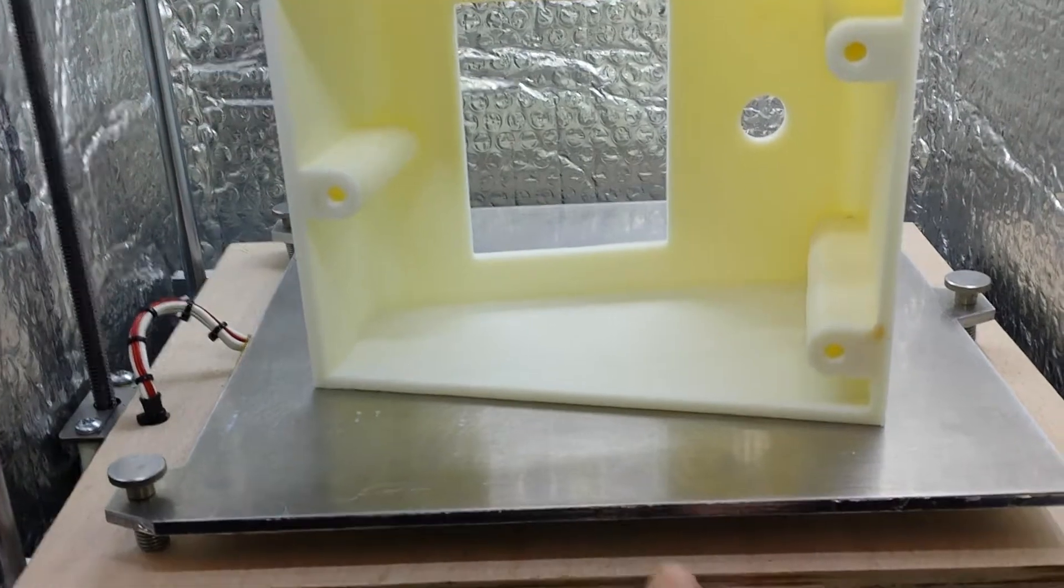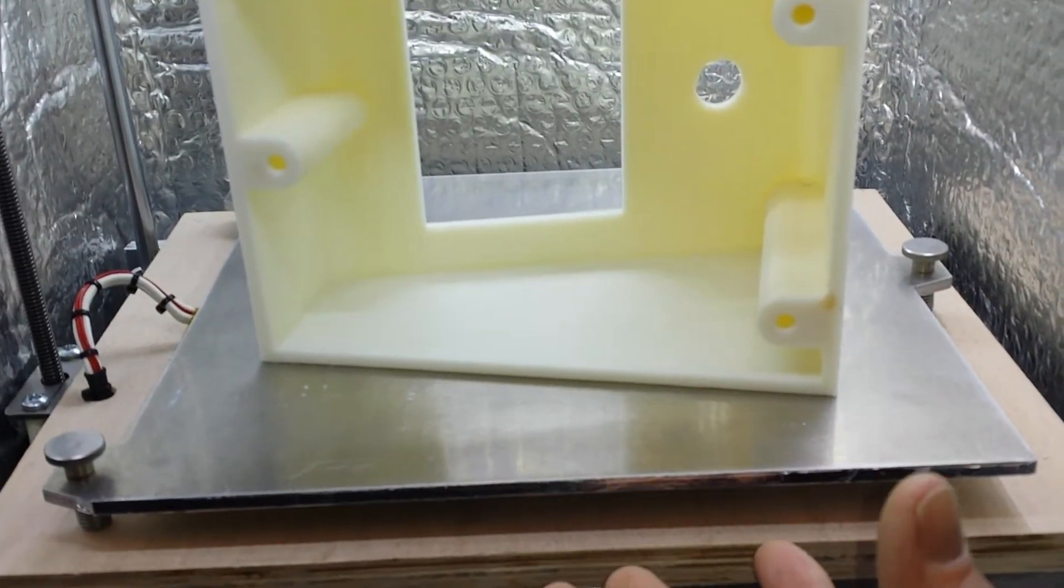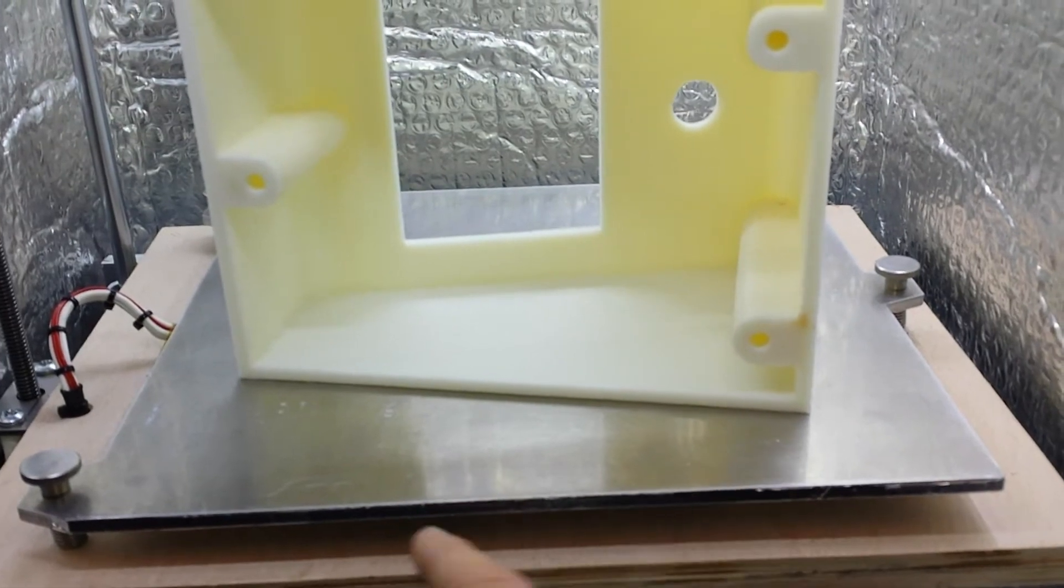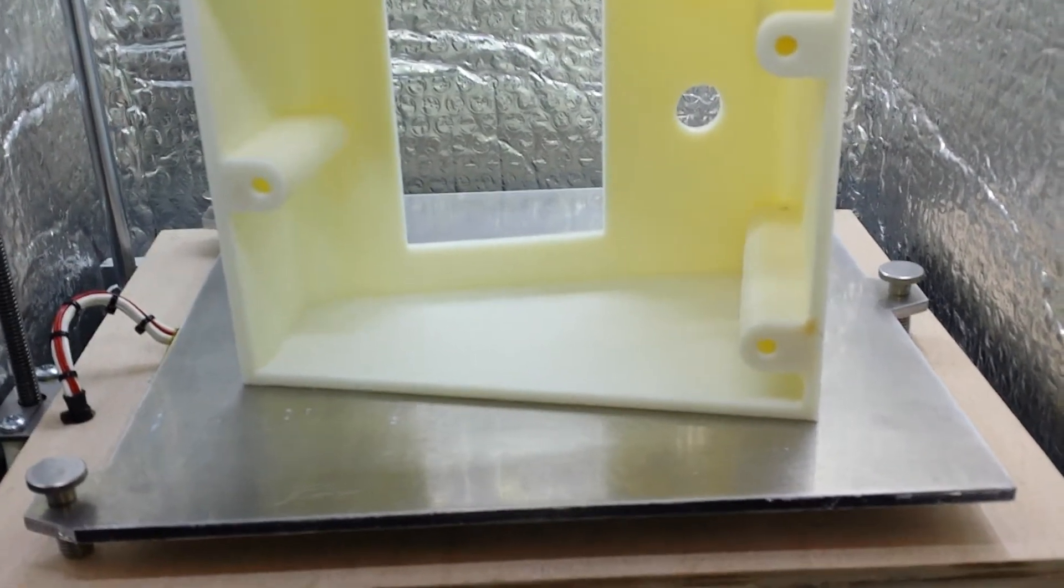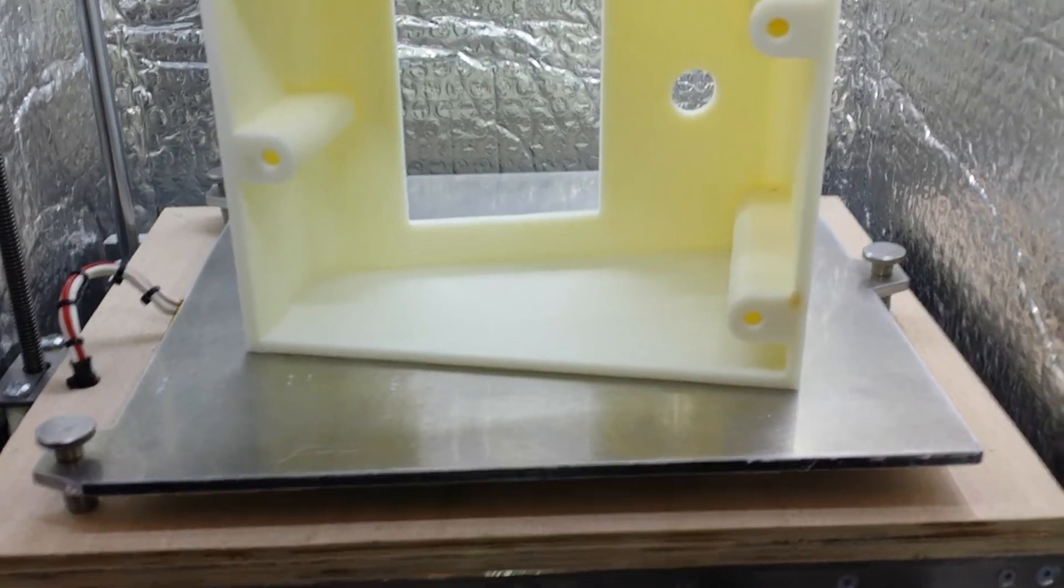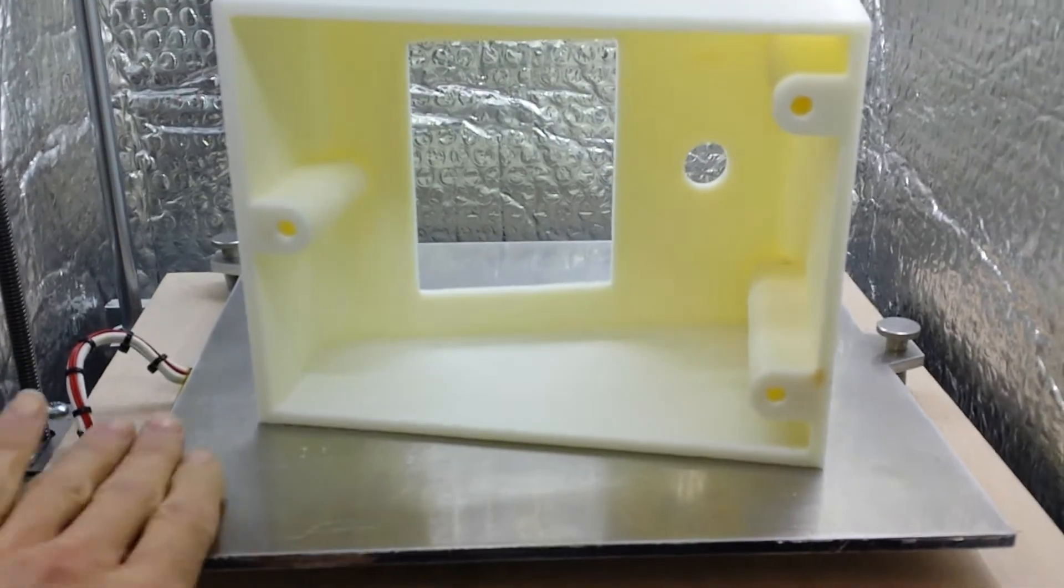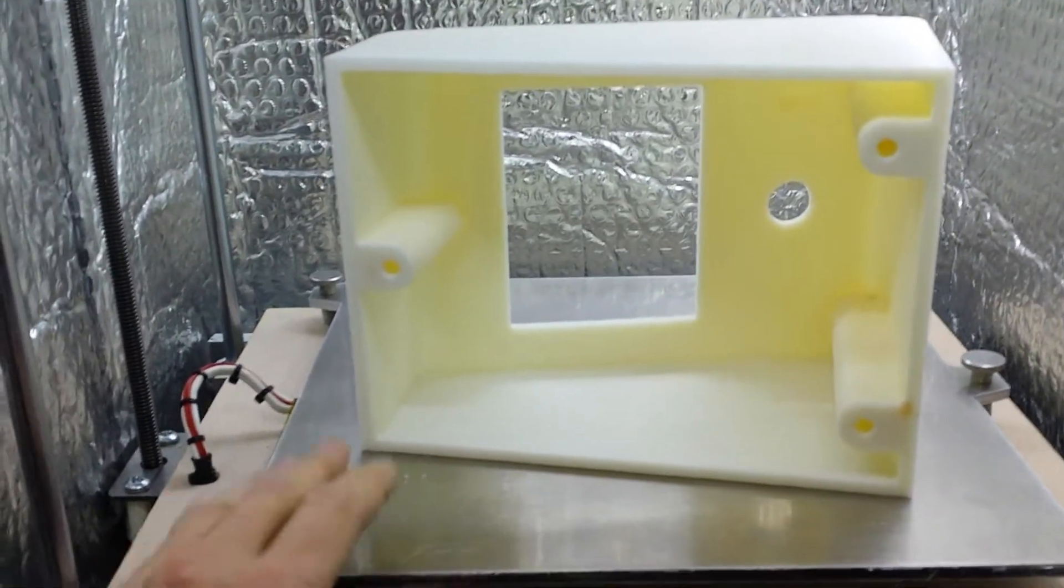That slot will cause some problems and over time the plate will warp. It will warp around the slots. It depends what you're using the plate for whether that's a problem. Now it will be a problem for 3D printer users because you're mounting a glass plate on top of that and you want to keep the whole thing flat.